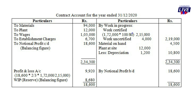Plant is debited at the full amount and we credit the closing plant balance. Wages and establishment charges are also our expenses. The credit side shows work in progress, which includes work certified and work uncertified.